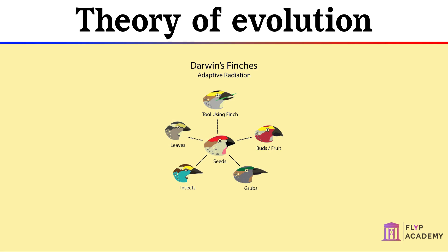Darwin noticed in particular that the finches on the islands showed great variation in their beak shape. The finches' beaks were different depending on what their food source was. Some had strong beaks that could crush seeds; others had long thin beaks to help them reach into small holes in trees for grubs. Fruit-eating finches had large beaks and tongues to help them eat soft fruit, and some finches even used sticks as tools to help them get food.